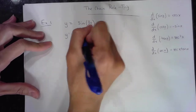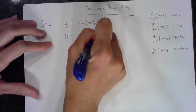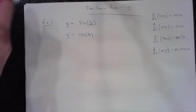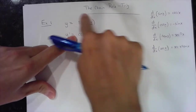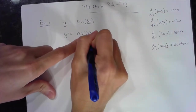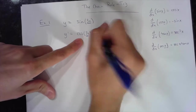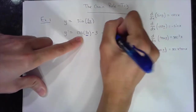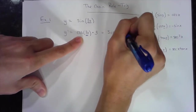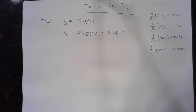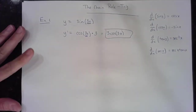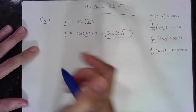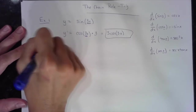So the derivative of sine of this angle is cosine of the same angle. The chain rule says that not only do I take the derivative of the whole thing, I have to multiply by the derivative of the inside — in this case, 3. This 3 goes to the front; it's not part of the angle. The angle stays as 3x. So the first derivative of sine of 3x is 3 times cosine of 3x.